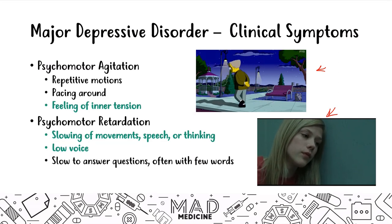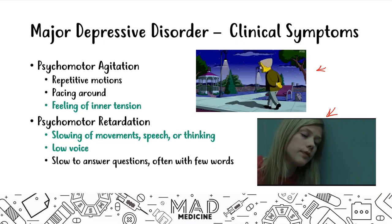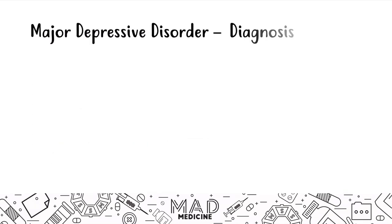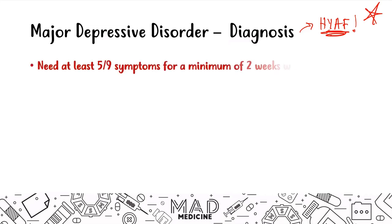Diagnosis is very important in psychiatry. When it comes to the USMLE Step 1, you have to understand the diagnostic criteria — one or two differences in criteria can change the entire diagnosis. This is a very high-yield slide. In MDD, you need to have at least five of the nine symptoms for a minimum of two weeks. Two weeks is the golden number for duration. All of these symptoms have to occur without mania.